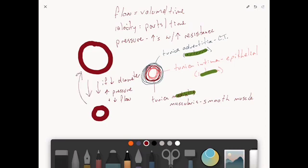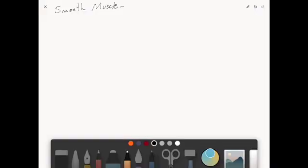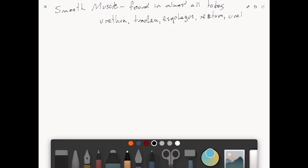So smooth muscle, if we just talk very generally about smooth muscle for a moment, smooth muscle is found in almost all tubes in your body. The urethra, the trachea, the esophagus, the rectum. What's another tube? The ureter, the uterus, the fallopian tubes. I could go on and on and on all of the tubes. But important to this part of the lecture, arteries and veins possess lots and lots of smooth muscle.